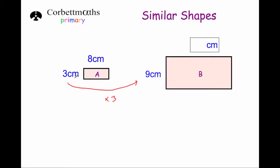The width has been multiplied by three, which means the length will also be multiplied by three — they have to be multiplied by the same number. So eight times three is 24, which means the length of this rectangle would be 24 centimetres.